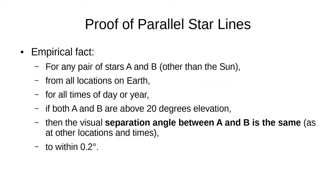This calculation can also be performed by the software that I demonstrated earlier. Now I want to return to a claim I made near the beginning that the lines of sight to stars are parallel. So, it is an empirical fact that you can verify yourself with a sextant, for example, that for any pairs of stars A and B, anywhere on Earth, anytime, so long as they're above 20 degrees elevation, their separation angle will be the same, to within 0.2 degrees.